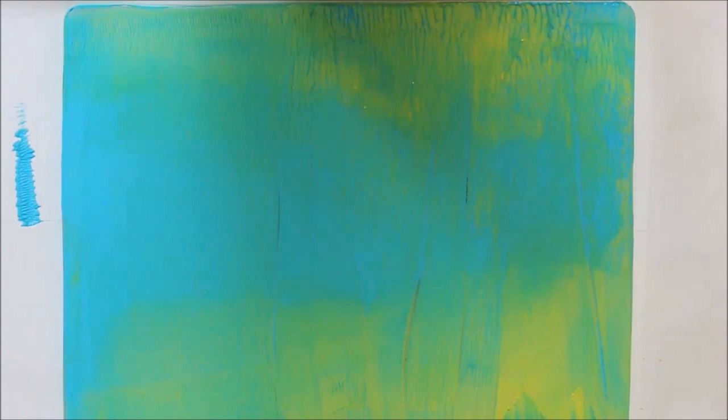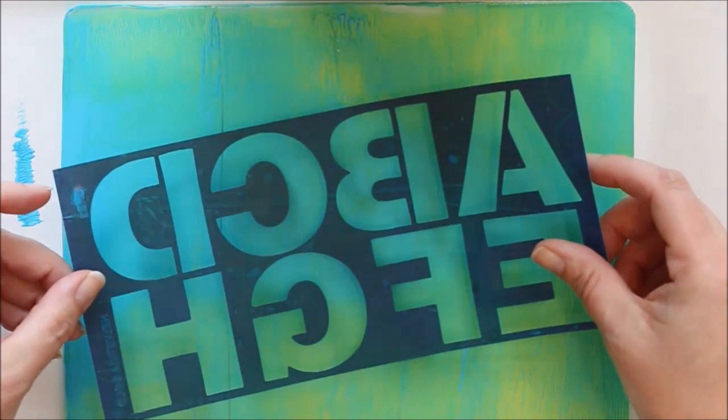Next, you want to take a stencil. Mine has letters, so I actually need to put it backwards onto the plate so that the letters will be frontwards. And then a piece of card stock—I just bought some cheap stuff from Walmart. Put it on the plate and rub all around it, and you'll get your first print.